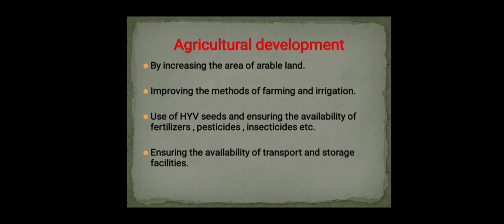Agriculture is very important for the development of a nation. Agricultural development can be achieved by increasing the area of arable land, improving farming methods, using high yield variety (HYV) seeds, ensuring availability of fertilizers and pesticides, and ensuring transport and storage facilities. Agricultural development is defined as a process that creates conditions for fulfilling agricultural potential, including accumulation of knowledge, technology, and the allocation of inputs and outputs.